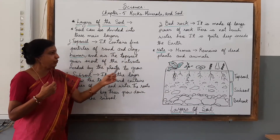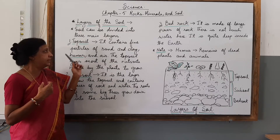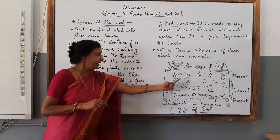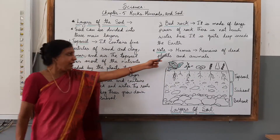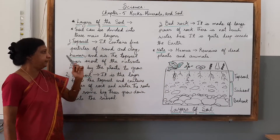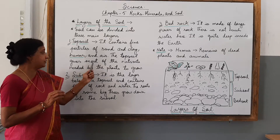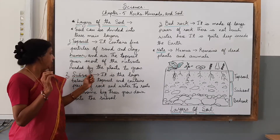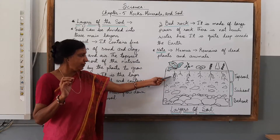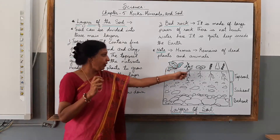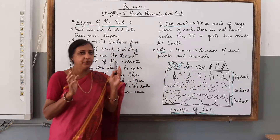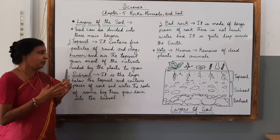So to summarize, topsoil contains fine particles of sand and clay, humus, and air. The topsoil gives most of the nutrients needed by plants to grow. You can see in the diagram that roots go down to absorb nutrients from the topsoil - all plants have their roots in the topsoil.